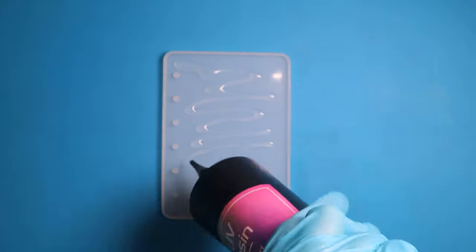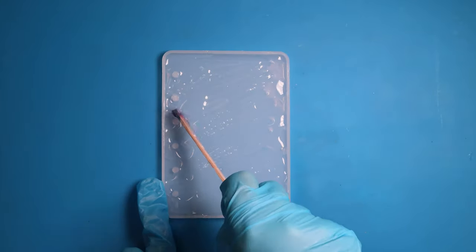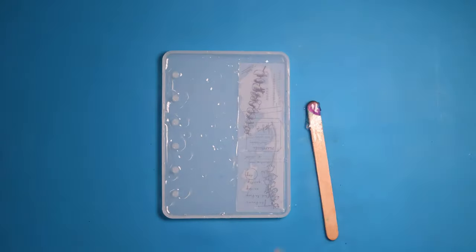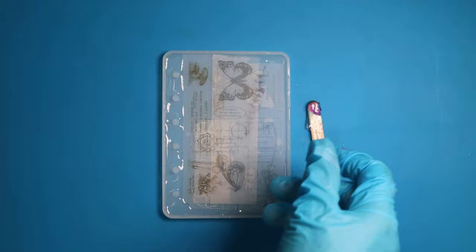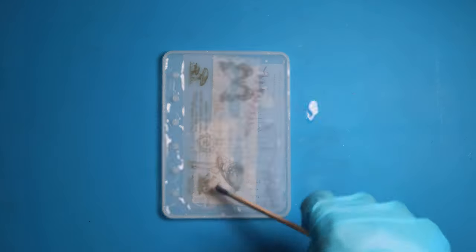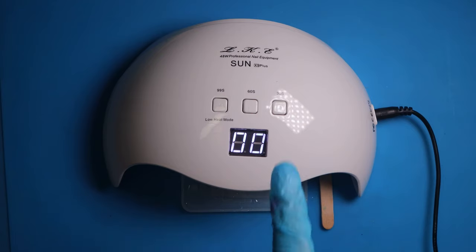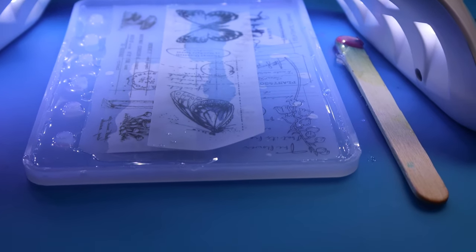You will need a heat-resistant silicone mat. I'm using a stick to mix the resin and some collage pieces to put inside the mold. You can use whatever you have. I have these collage pieces so I thought I'd use them, and I cured the resin for two minutes according to the instructions on the bottle.